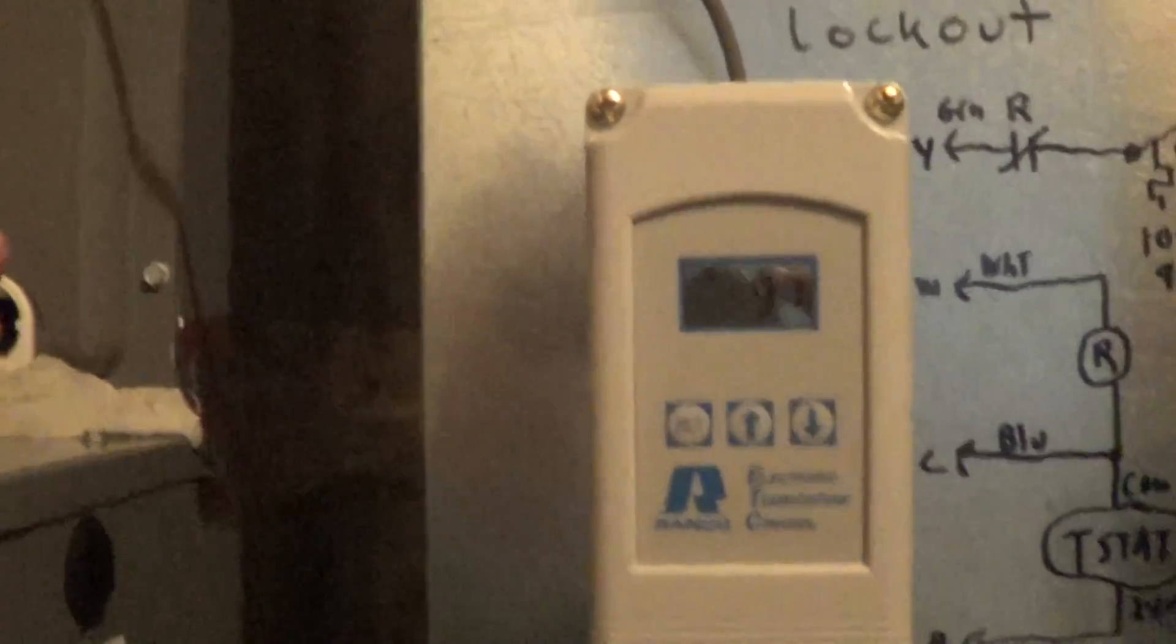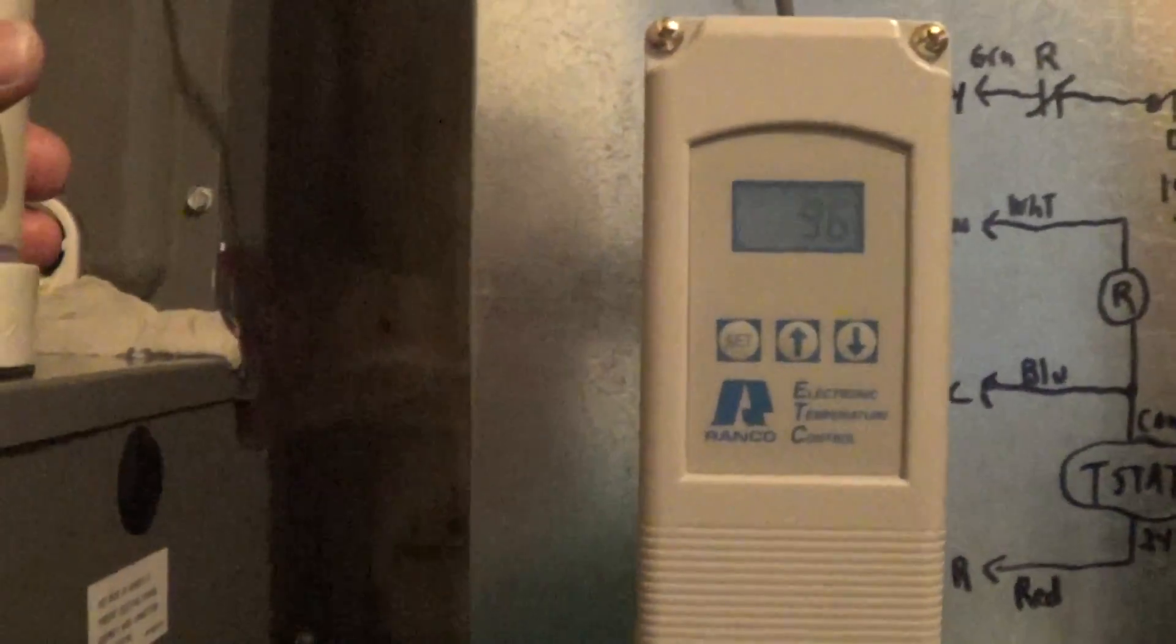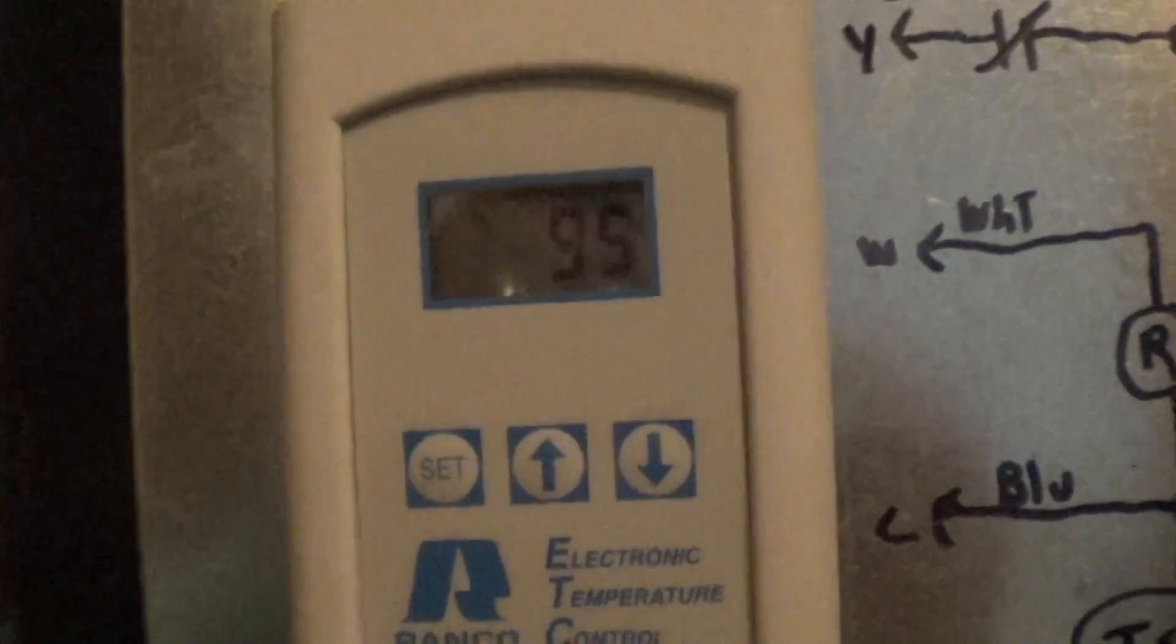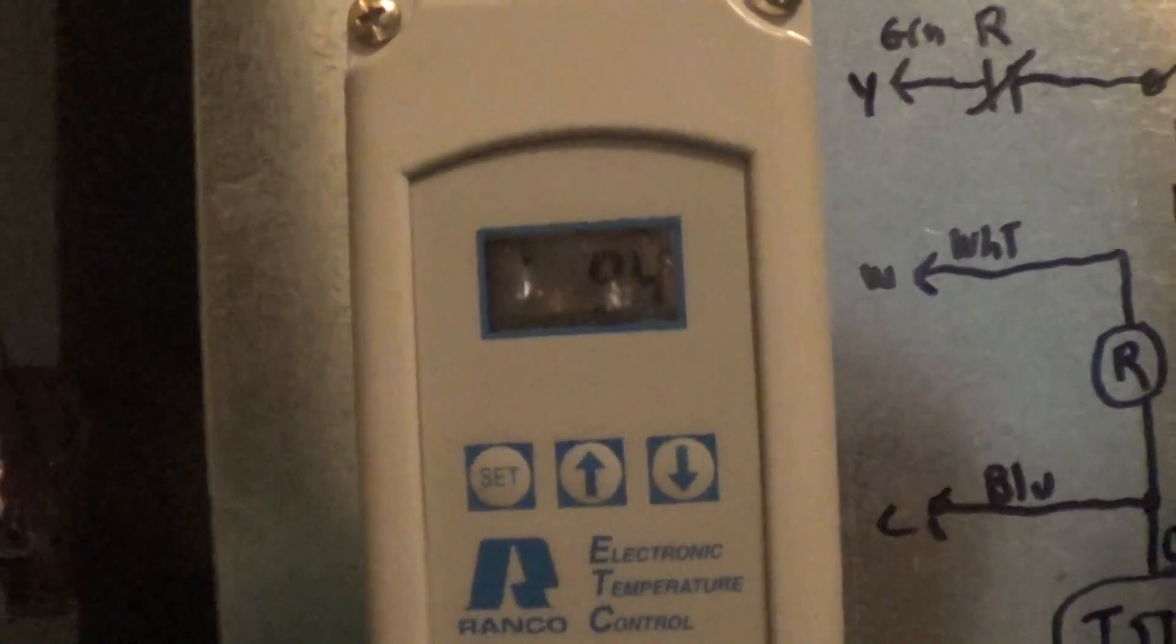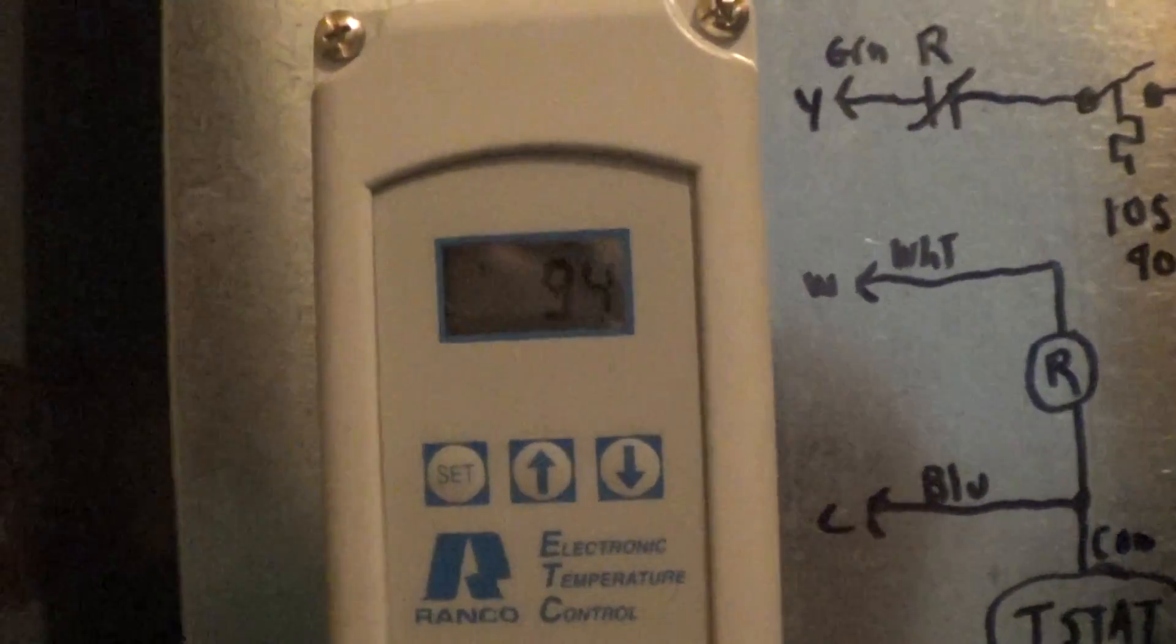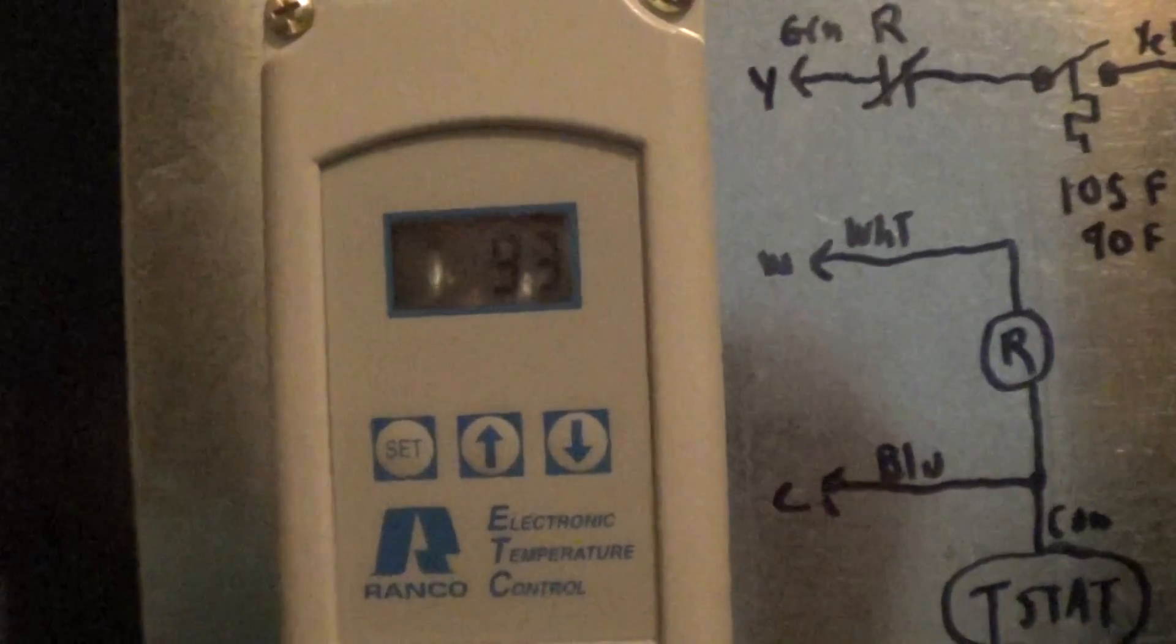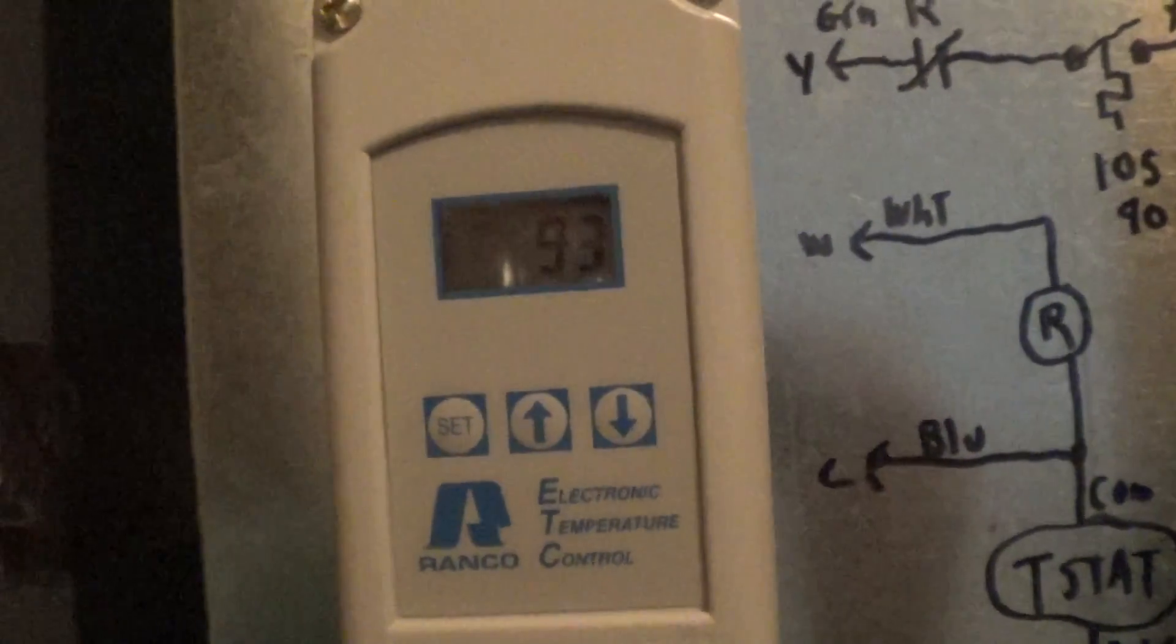Okay, now the fan just shut off for the furnace, because the furnace did its cool down, but notice it's still 95 degrees. Now the green is allowing the fan to run and let it cool down. Once it hits 90, the heat pump will be allowed to turn back on.